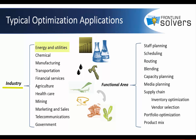Industries include energy and utilities, chemical, manufacturing, transportation, agriculture, and healthcare. Functional areas include staff planning, scheduling, routing, and blending.